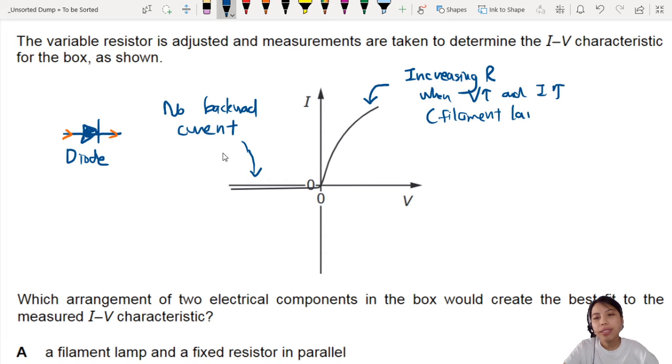Because the other components either are straight line or they curve in a different way. So possibly there's a diode and probably a filament lamp inside that box. But how? Okay, so we keep this in mind.